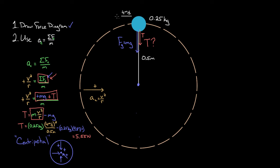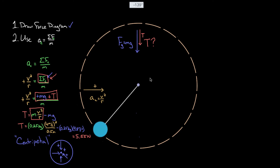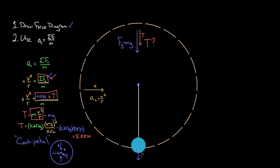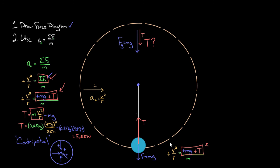Now consider the case where the yo-yo rotates down to the bottom of its path. The force diagram looks different: gravity still points straight down with magnitude mg, but now the tension points upward — because the string is always pulling the mass toward the center of the circle. At the bottom, the center is above, so tension points up. Now one of the forces is negative: tension points toward the center (positive), but gravity points radially away from the center (negative centripetal force).